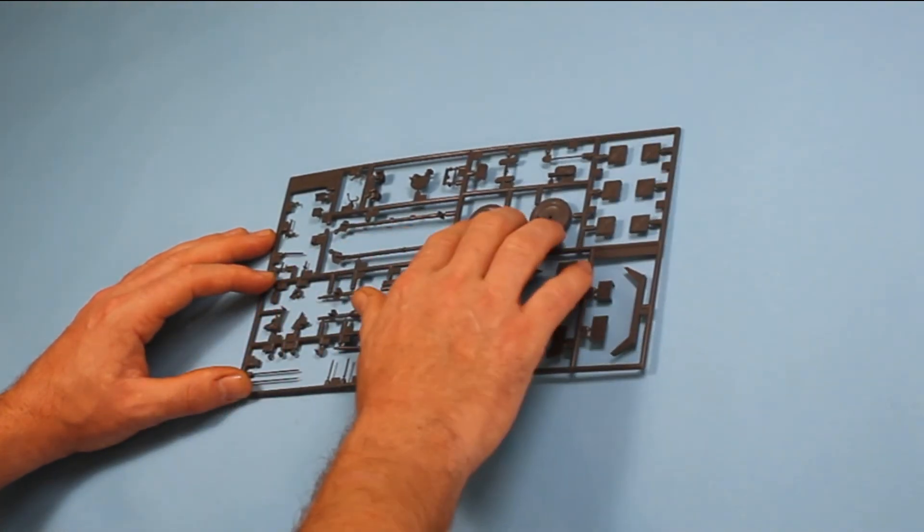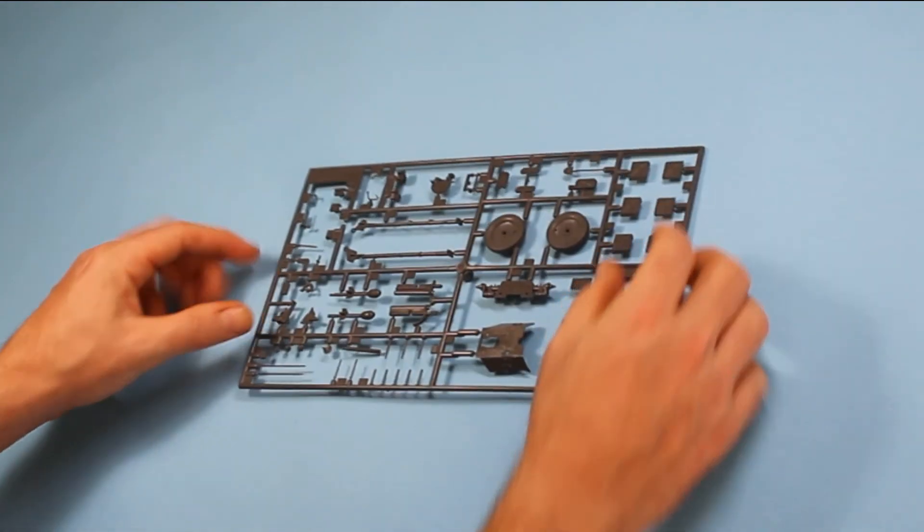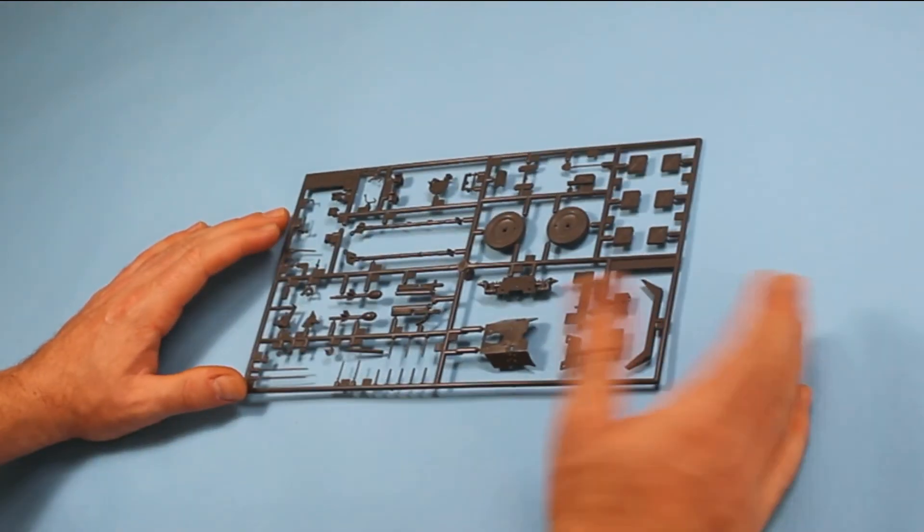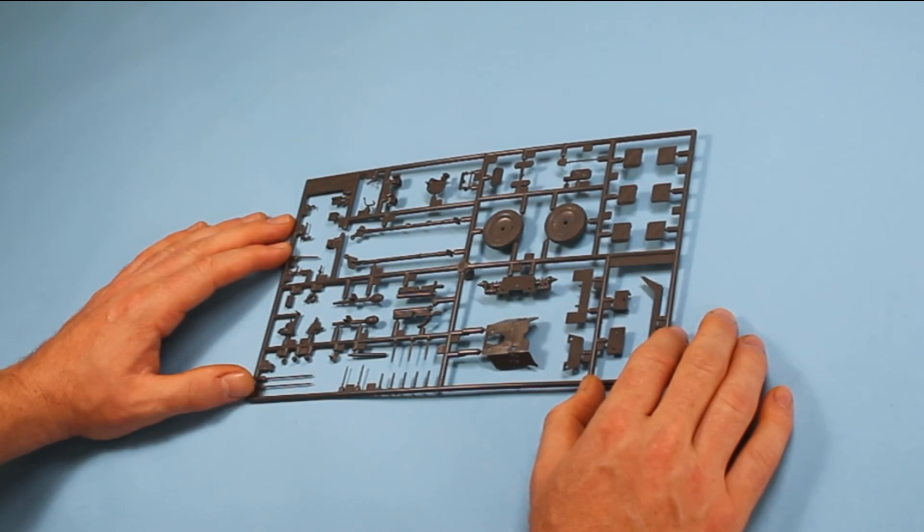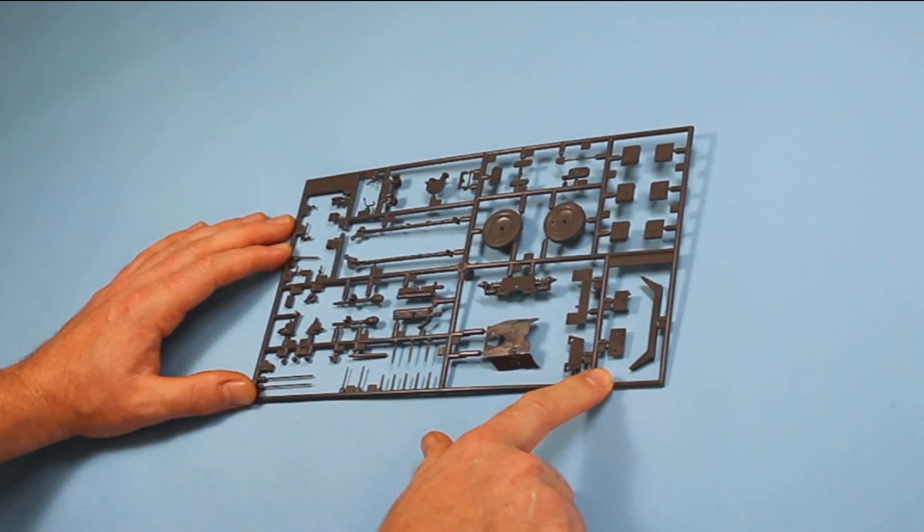But what you'll find, quite surprisingly, is quite how crisp the molding is across most of this. Because it is Tamiya, even though it's old, it is done very well. This here is the mount for the SDK FZ 251, if you wish to use it.